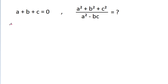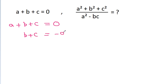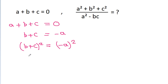We have given that a plus b plus c is equal to 0, so b plus c is equal to minus a. If we square both sides, then we will get b plus c square is equal to minus a square, and expanding: b square plus c square plus 2bc is equal to a square.